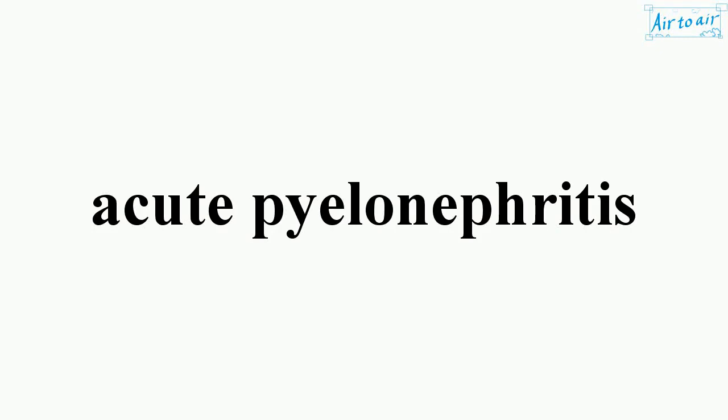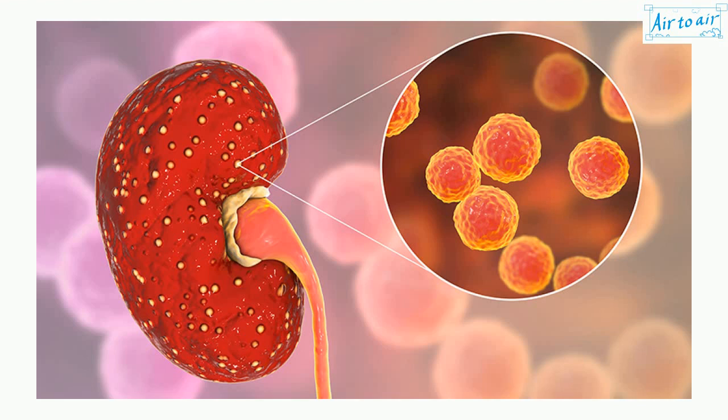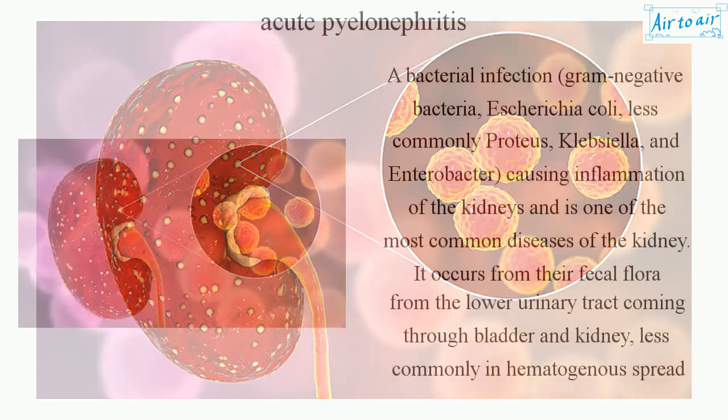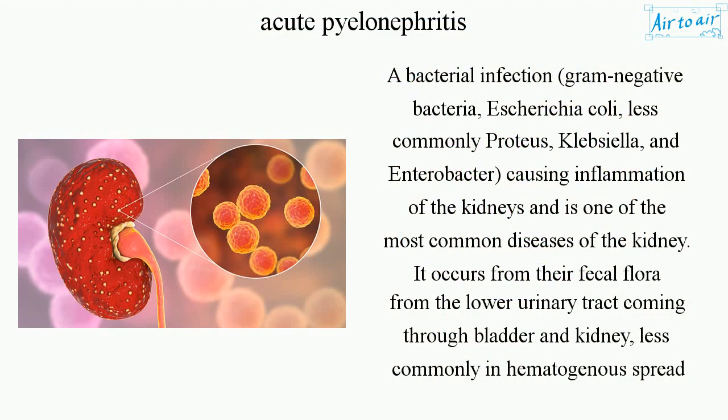Acute pyelonephritis is a bacterial infection caused by gram-negative bacteria — Escherichia coli, and less commonly Proteus, Klebsiella, and Enterobacter — causing inflammation of the kidneys. It is one of the most common diseases of the kidney.